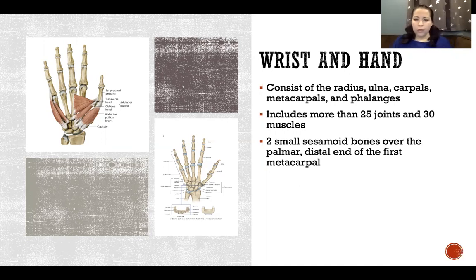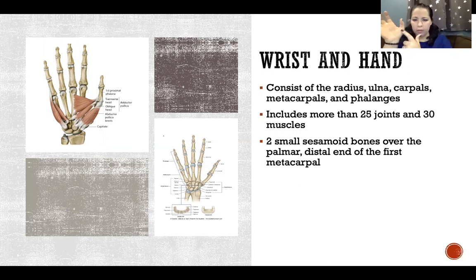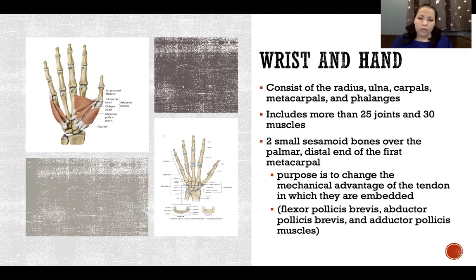There are two small sesamoid bones over the palmar distal end of the first metacarpal — the metacarpal of the thumb. The purpose of any sesamoid bone is to change the mechanical advantage of the tendon in which they are embedded, which in this case includes flexor pollicis brevis, abductor pollicis brevis, and adductor pollicis muscles.